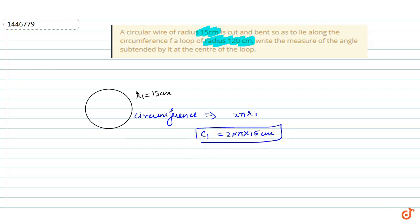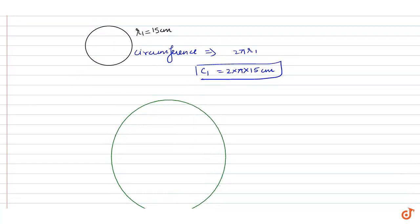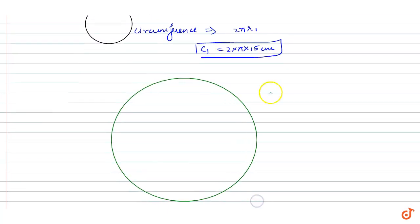Now we have a circle which has radius given r₂, that is 120 cm. Now we have to take this wire, break it, and have it lie along this circumference. We have to fit this entire wire to this circumference.